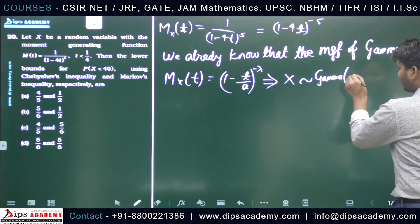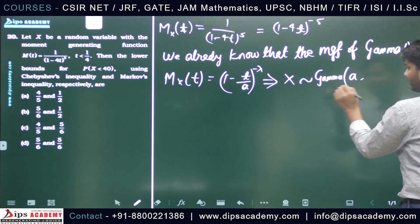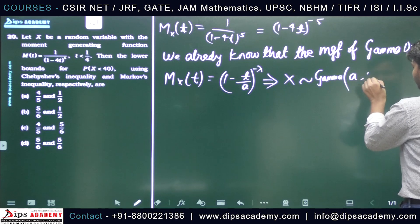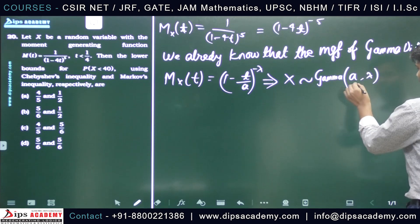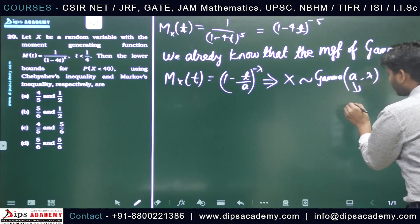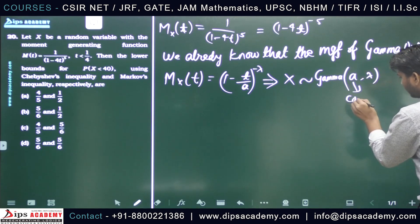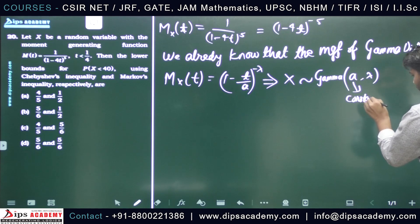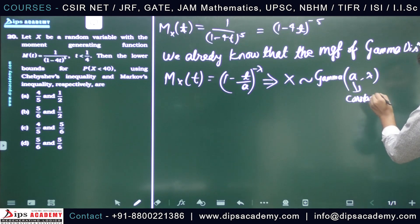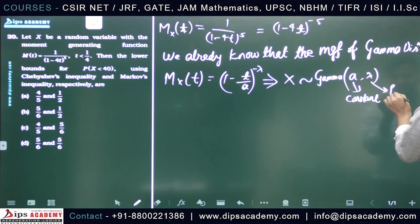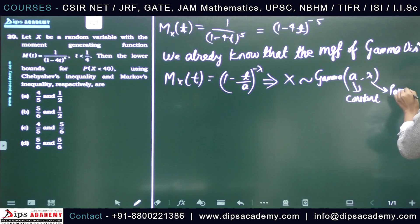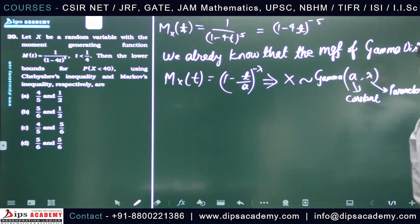So x follows a Gamma distribution with constant a and parameter λ. Here a is the scale constant and λ is the shape parameter.